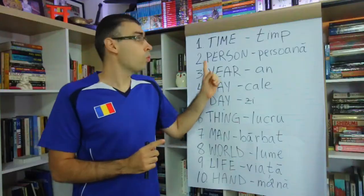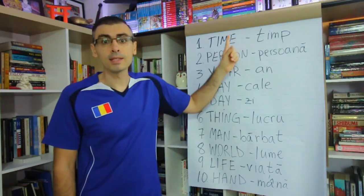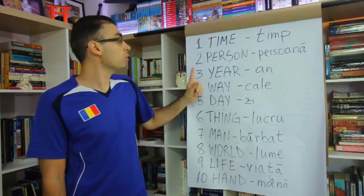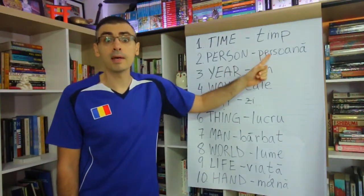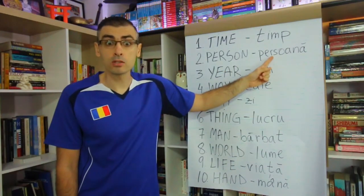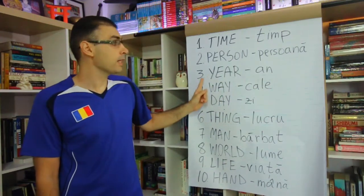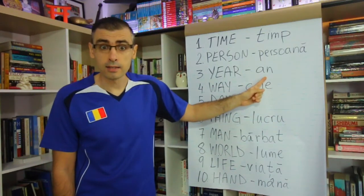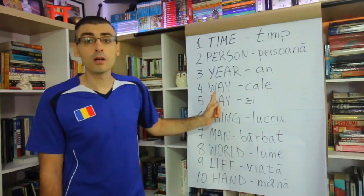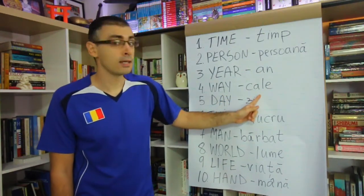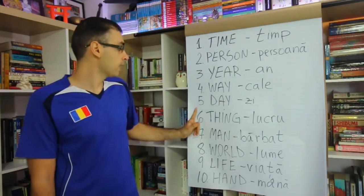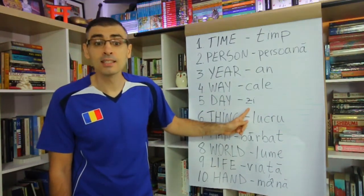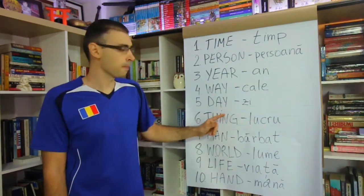One, time, timp, timp. Two, person, persoana, persoana. Three, year, an, an. Four, way, cale, cale. Five, day, zi, zi.